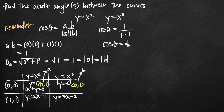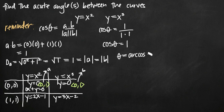At this point you should know this off the top of your head, but make sure your calculator is set to degree mode when looking for the angle between curves. Taking the inverse cosine of both sides, theta equals arc cosine of 1, which equals 0 degrees. That makes sense because when we have two lines that are exactly the same — y equals 0 and y equals 0 — the angle between them is 0. They're the same line, so the angle is 0.